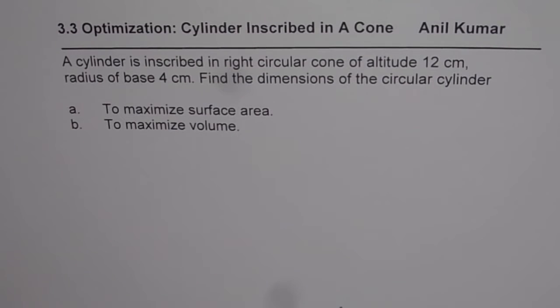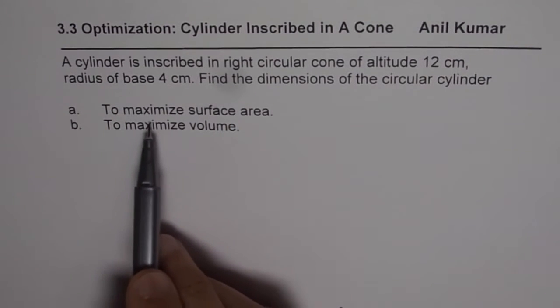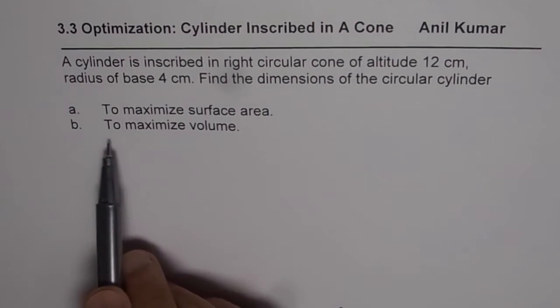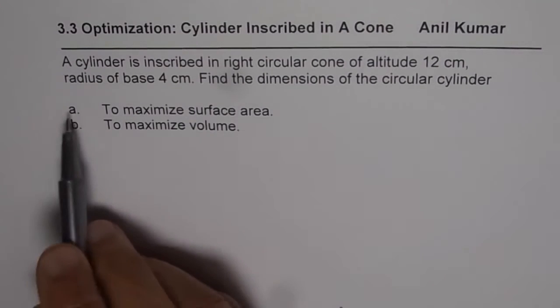I am Anil Kumar and in this video we will try to understand how to solve optimization problems when a cylinder is inside a cone. The question here is, a cylinder is inscribed in the right circular cone of altitude 12 cm, radius of the base 4 cm.